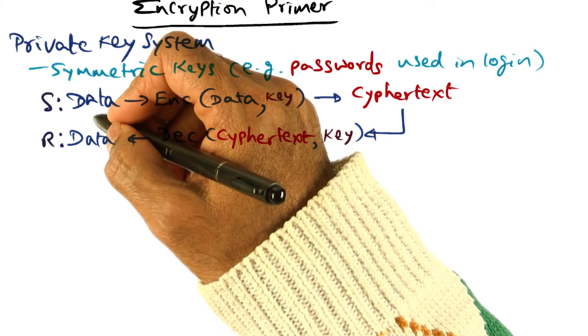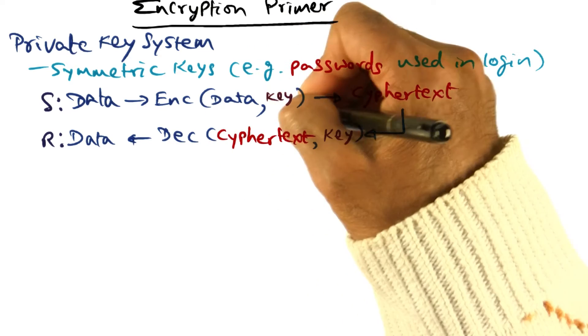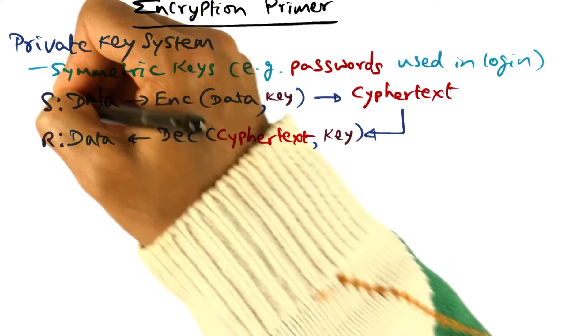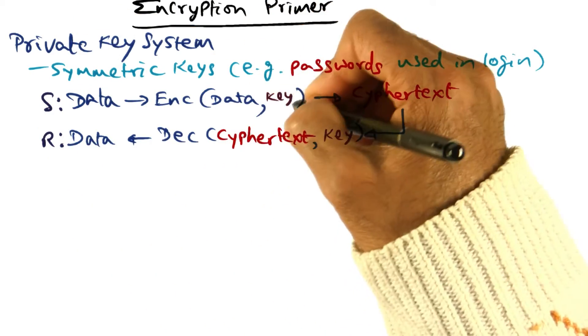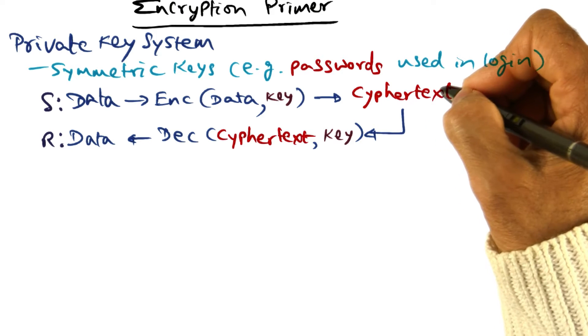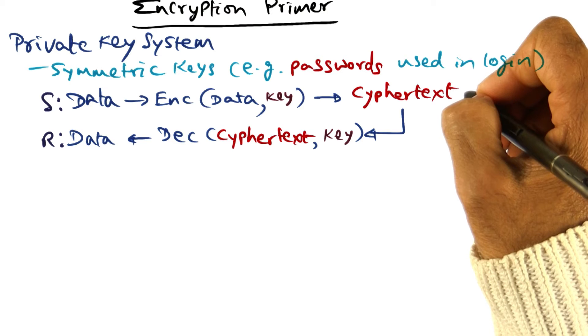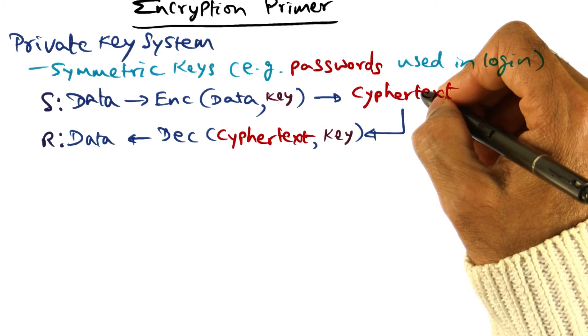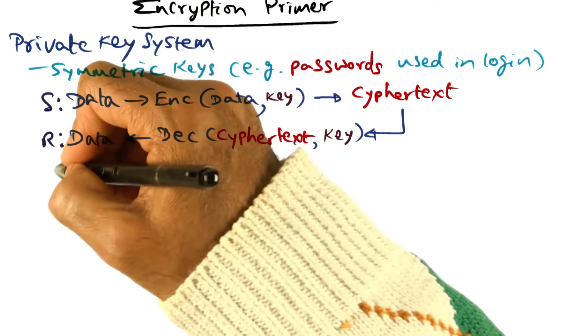The idea is simple. The sender takes the data that they want to send to a receiver, encrypts the data using a key, and this key is a private key that is known only to the sender and the receiver and nobody else. By encrypting the data with this key, they produce what is called a ciphertext. The ciphertext can go on insecure links. Anybody can see the bit pattern of the ciphertext, but in order to make sense out of the ciphertext, they have to decrypt it. And to decrypt it, they need the key, which is only available between the sender and the receiver.